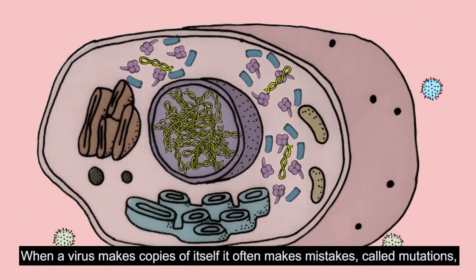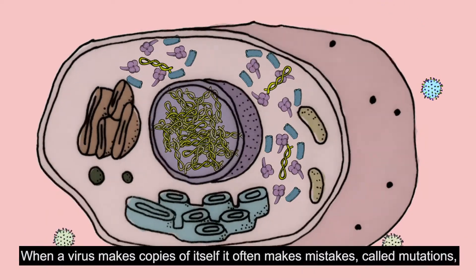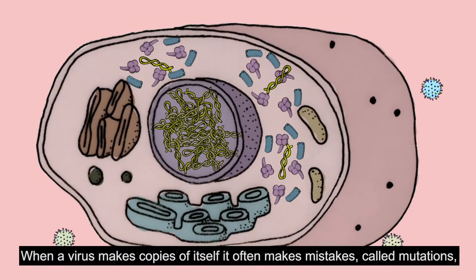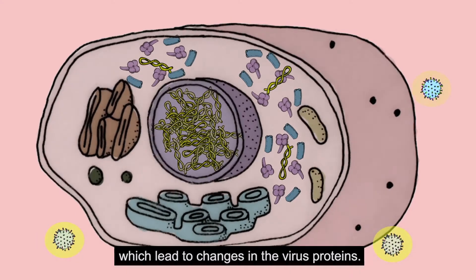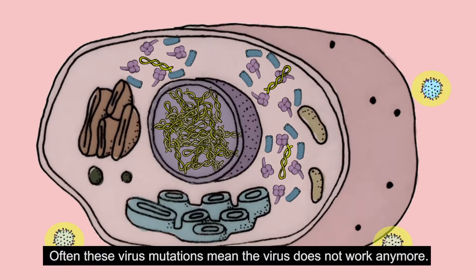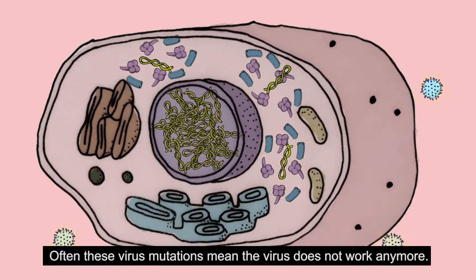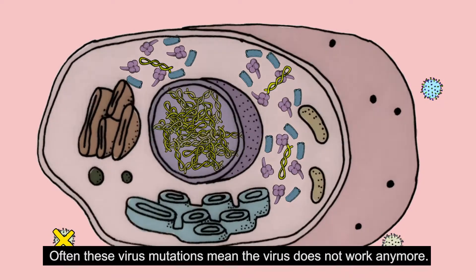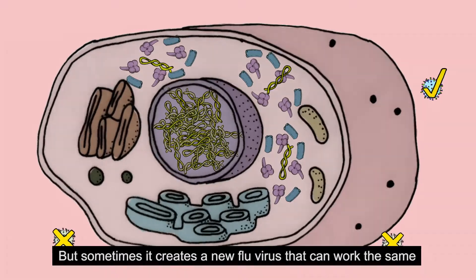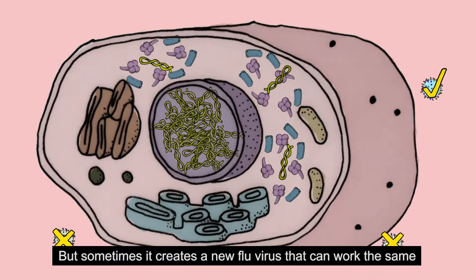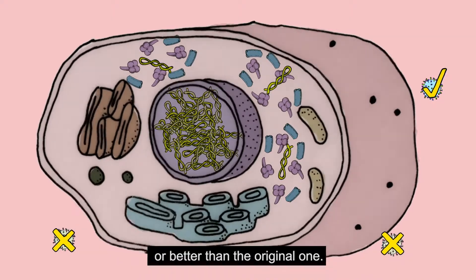When a virus makes copies of itself, it often makes mistakes called mutations, which lead to changes in the virus proteins. Often these virus mutations mean the virus does not work anymore. But sometimes it creates a new flu virus that can work the same or better than the original one.